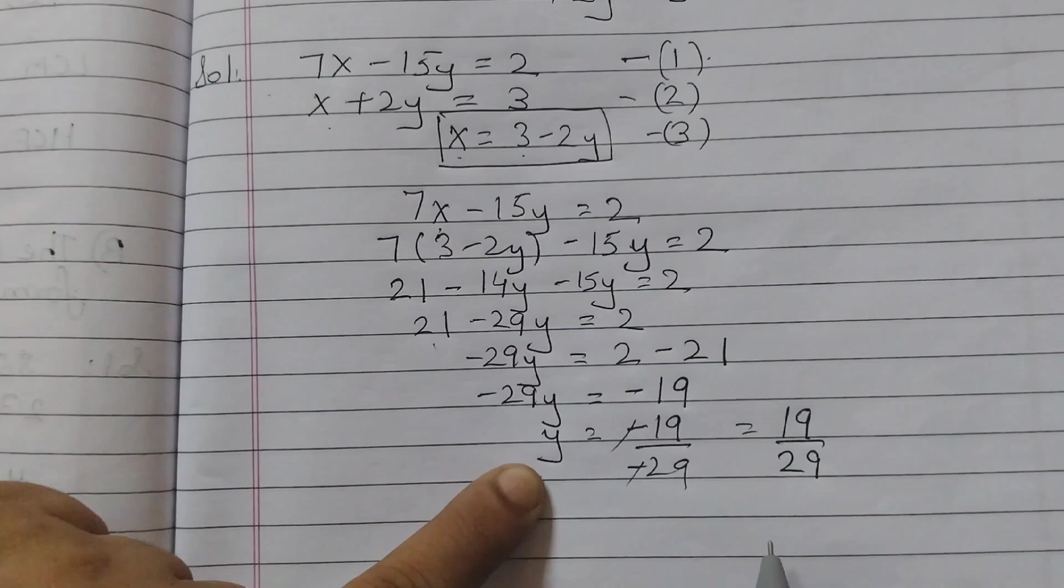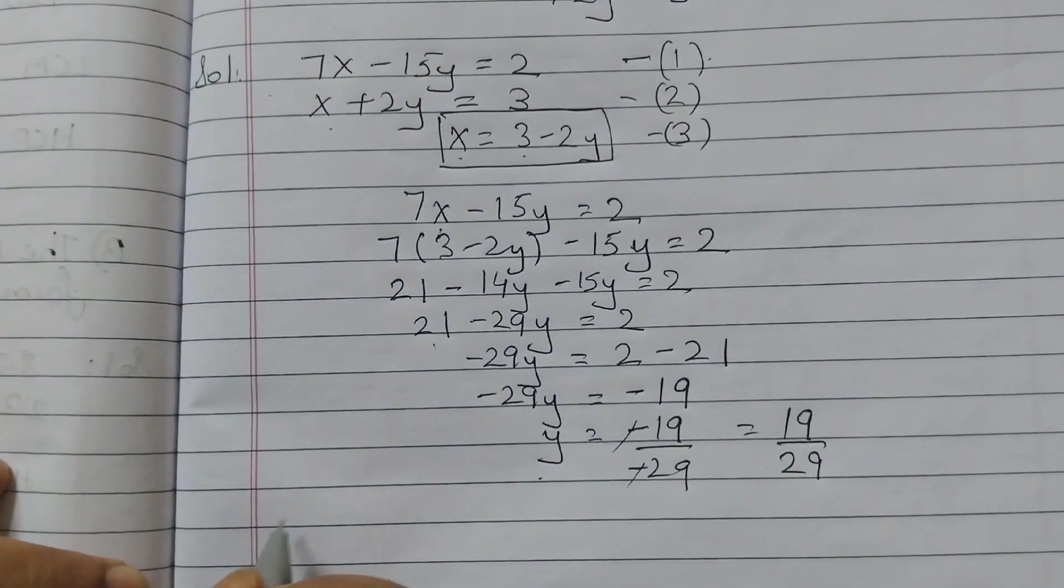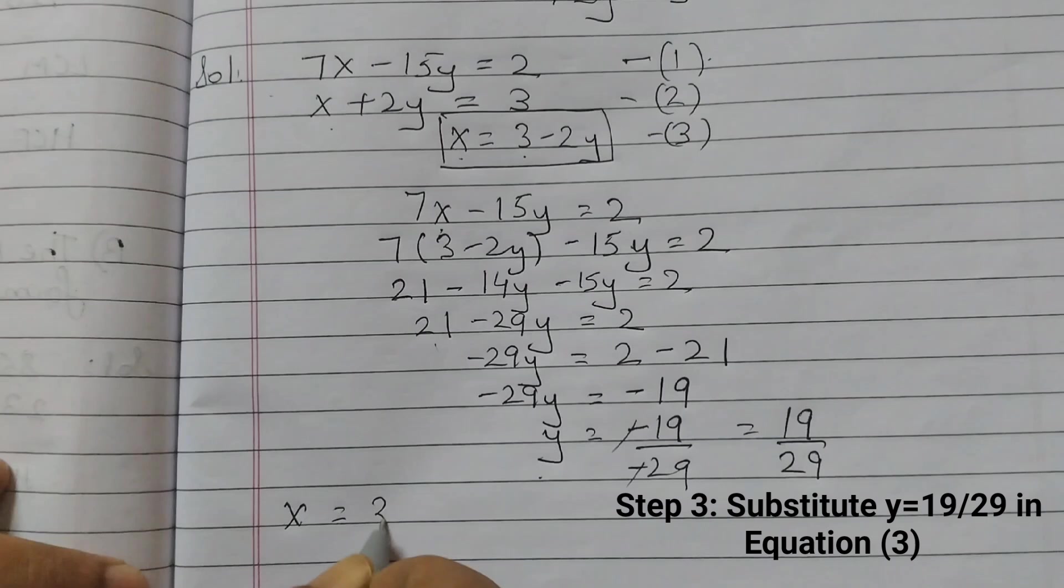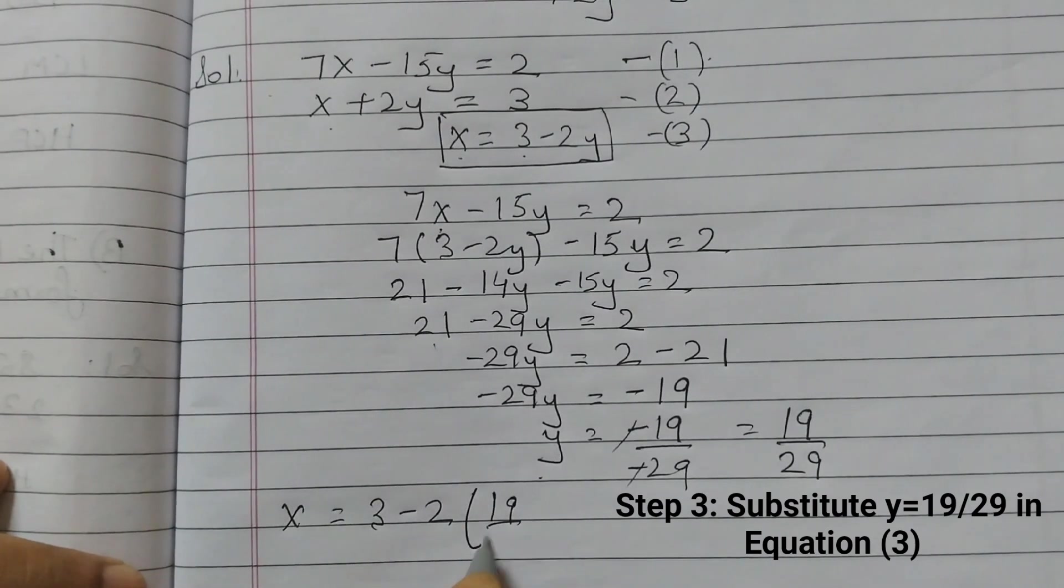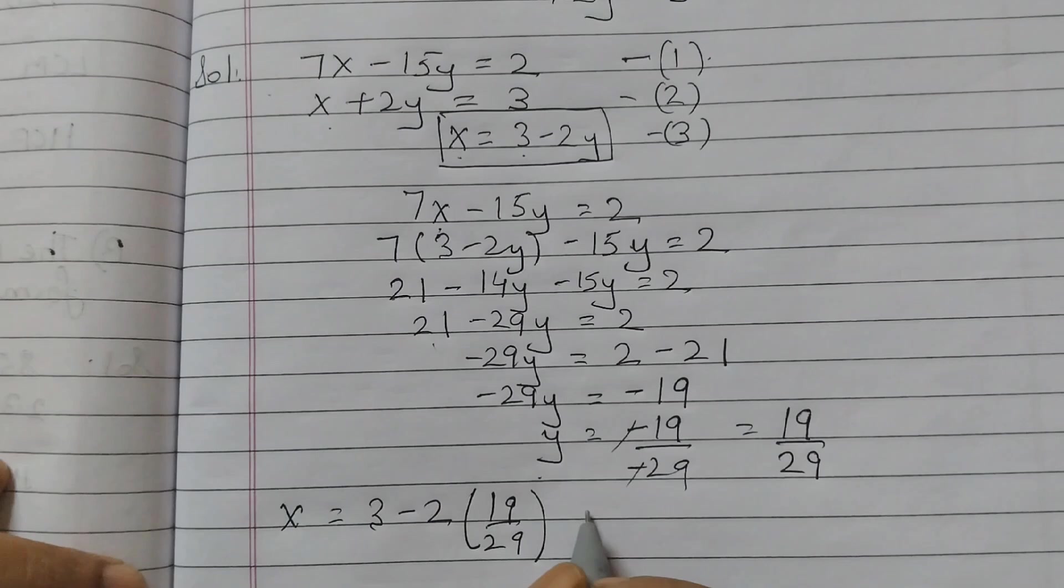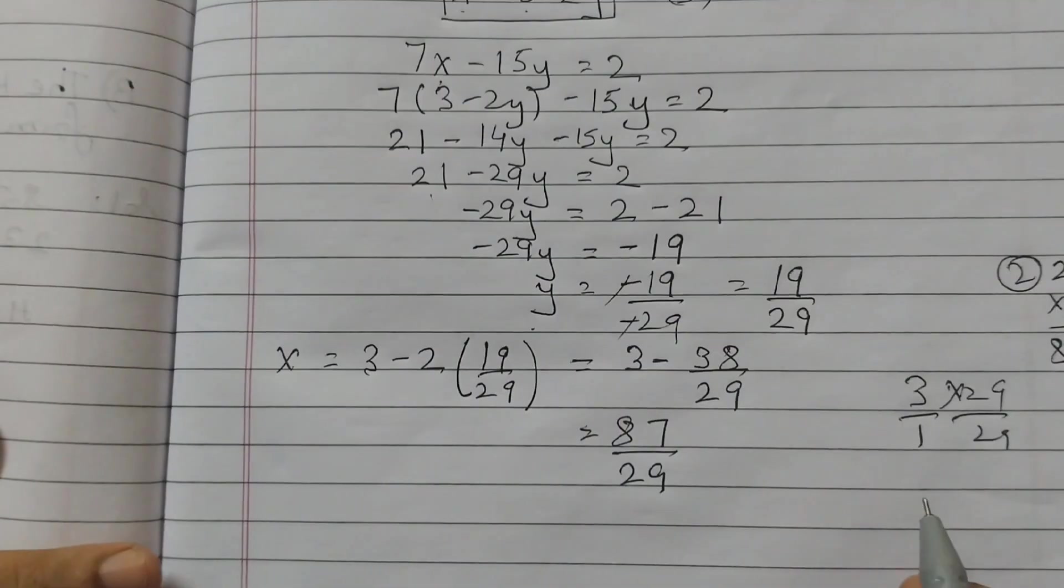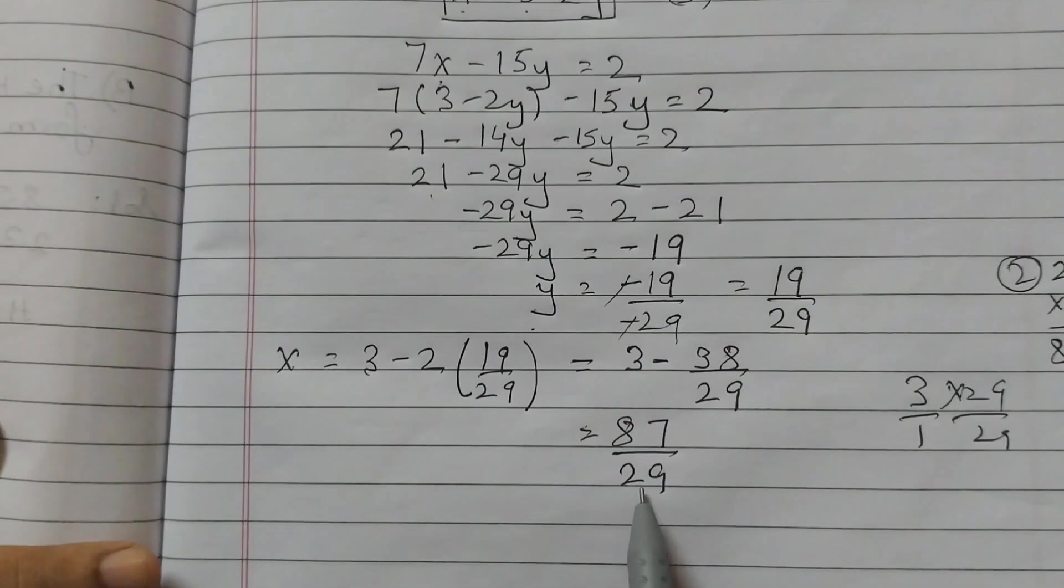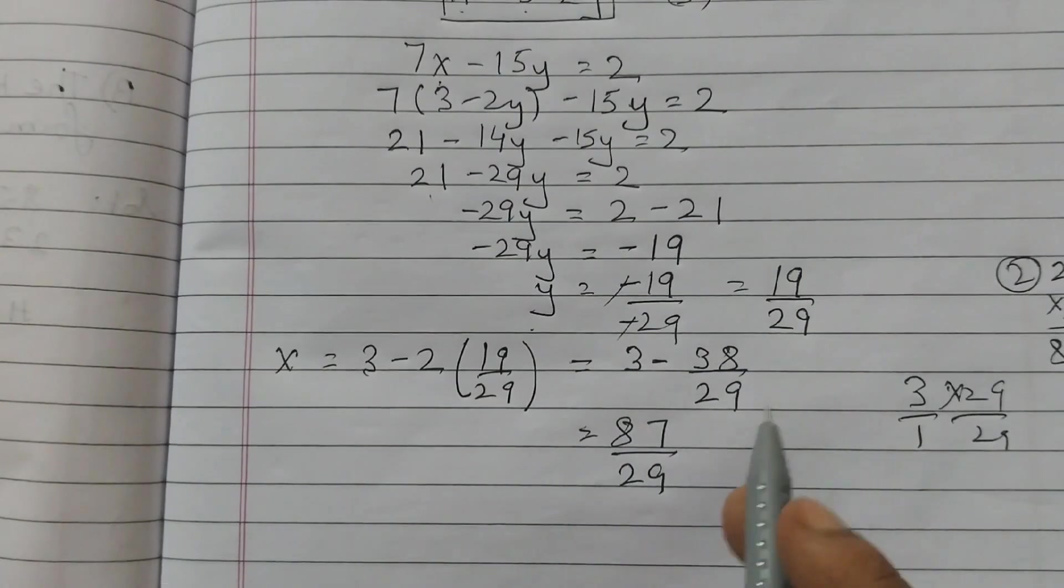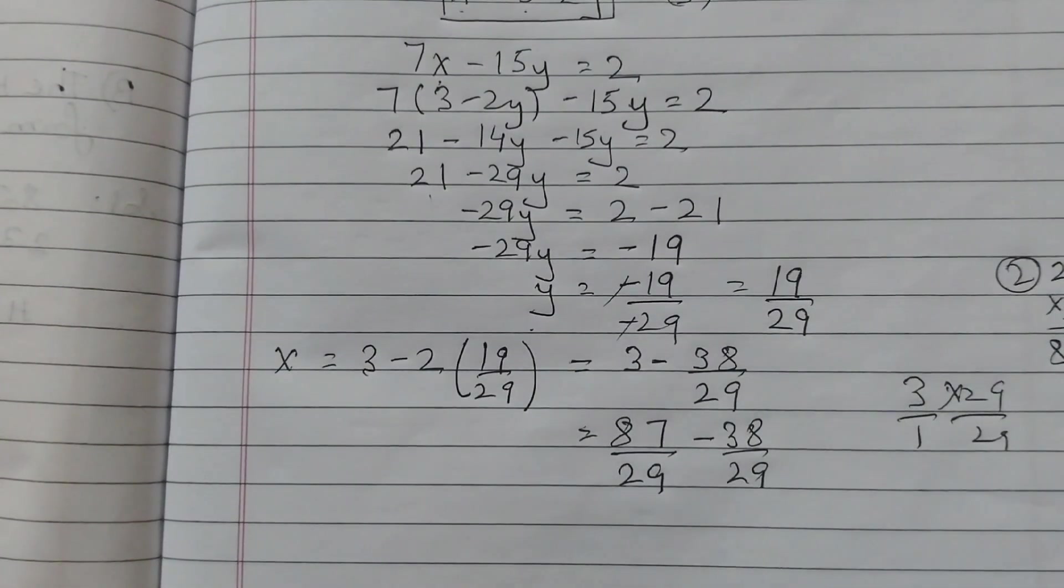Now this value of y we are going to substitute to get the value of x. So x equals 3 minus 2 times 19 by 29. That equals 3 minus 38 by 29. We have converted 3 to 87 by 29 because we want the same denominator. So 87 by 29 minus 38 by 29.